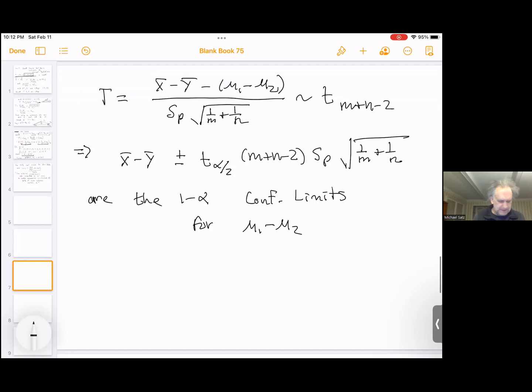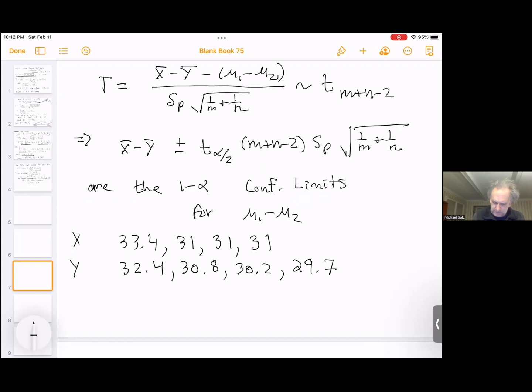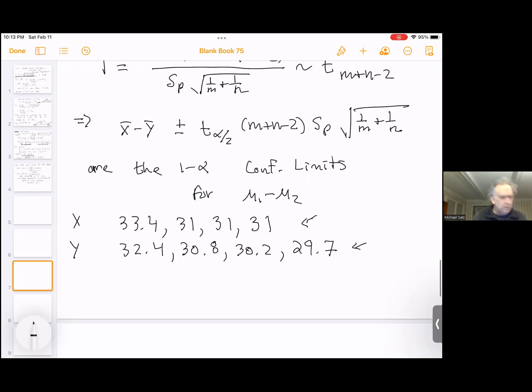I just have a kind of quick numerical example. So suppose I have four numbers for x, very small samples, so I have 33.4, 31, 31, 31. And for y, I have 32.4, 30.8, 30.2, 29.7. I looked up the top wing scorers in the NBA and the top point guard scorers in the NBA. This is the point guards here, and this are the wings here. And these were the top four in each category. And I want to see if the point guards tend to score, have a higher mean for the number of points per game.